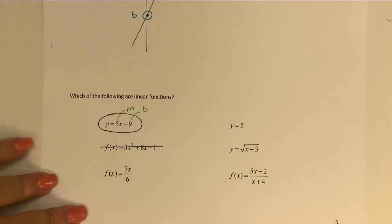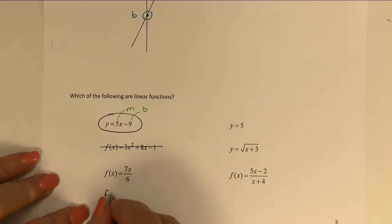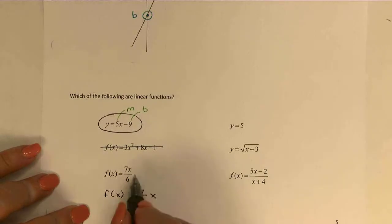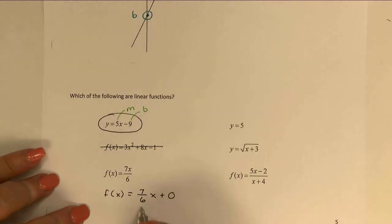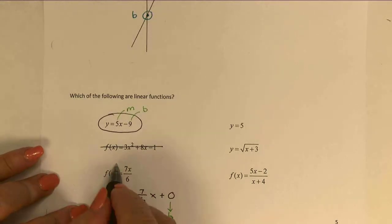If you're kind of wondering where the pieces went, we could rewrite this one. 7x divided by 6 could also be written as 7/6 times x. Now we're kind of missing the plus b, but if I put that in as a plus 0, which we normally wouldn't write, but we could just for now, it makes it really obvious that we have a slope m of 7/6, and our y-intercept b is 0. So this one is a linear function.